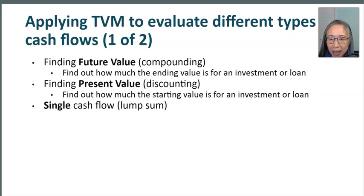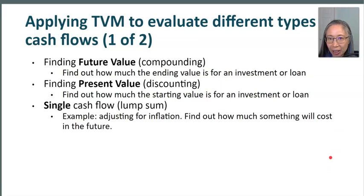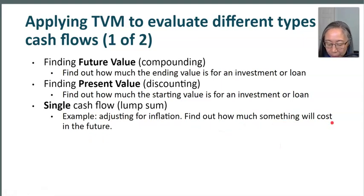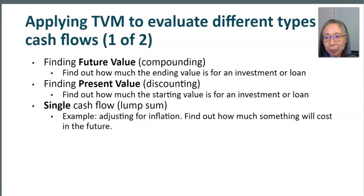We can evaluate cash flow one at a time — a single cash flow. The finance term we use is lump sum. A very common use of time value of money for a single cash flow is adjusting for inflation. For example, if you need $60,000 to support your standard of living today, how much will you need in 40 years given a certain inflation rate? That's a very common retirement planning problem.